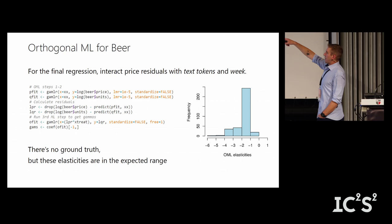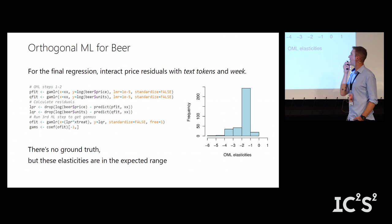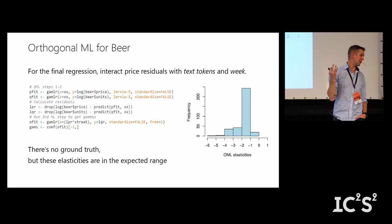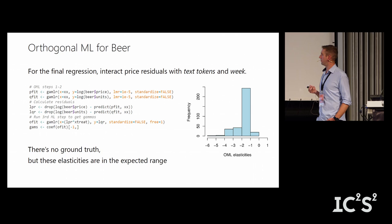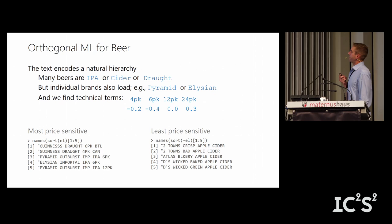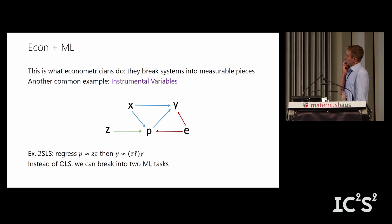When you run this procedure on the beer data, you finally get reasonable elasticities — things that live mostly between minus one and minus six, which is the expected range. We also do experimental validation afterwards for products we actually sell. The text encodes a natural hierarchy of product characteristics that helps the model.